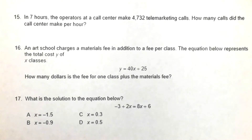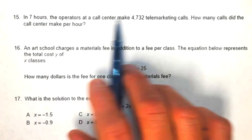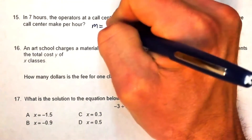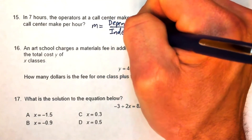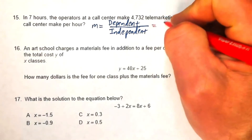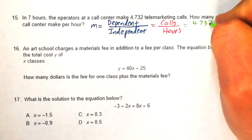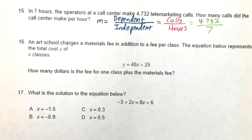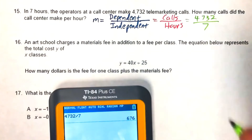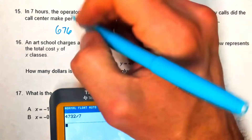Problem fifteen: a call center makes 4,732 calls in seven hours. To find calls per hour, divide the dependent variable (calls) by the independent variable (hours): 4732 ÷ 7 = 676. The call center makes 676 calls per hour.